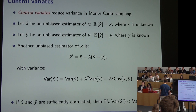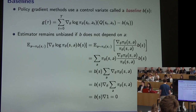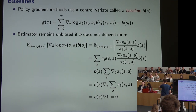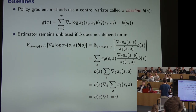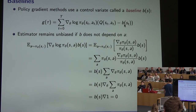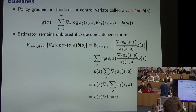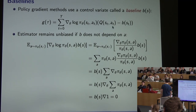In policy gradient methods, a commonly used trick is to introduce a term called a baseline into the policy gradient estimate. The rule is: the baseline can be anything you like as long as it doesn't condition on the action — it can condition on the state but not the action. So here we take a Q-value of a state-action pair; we can use the state but not the action in the baseline.